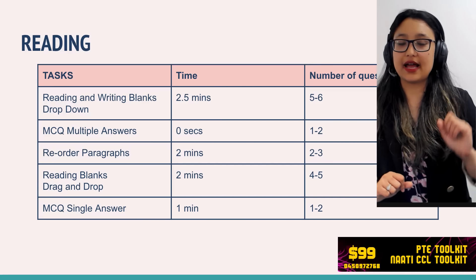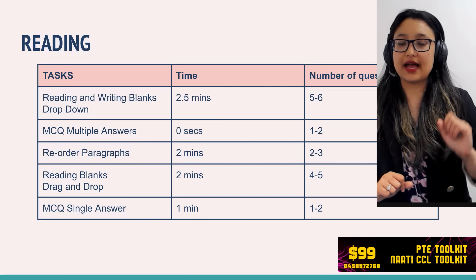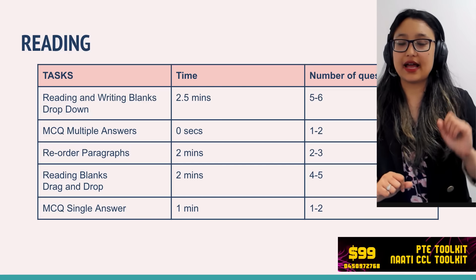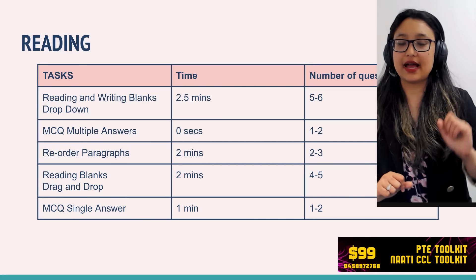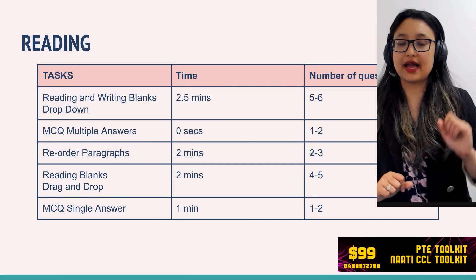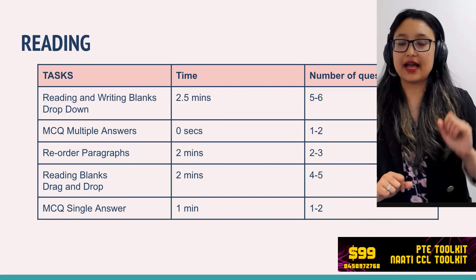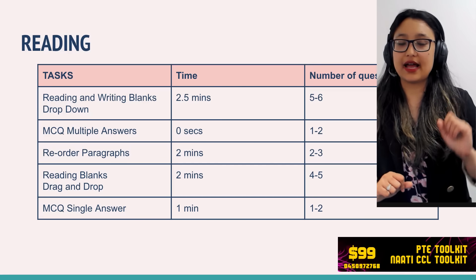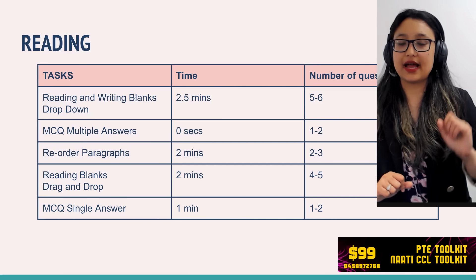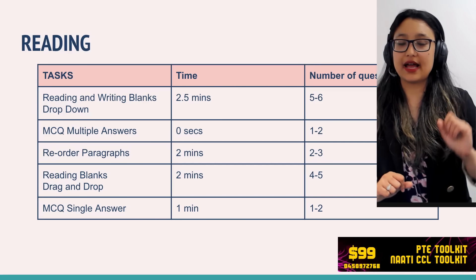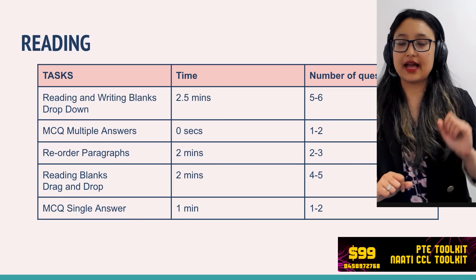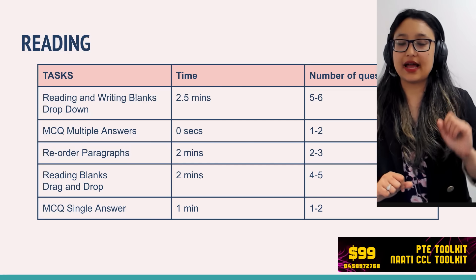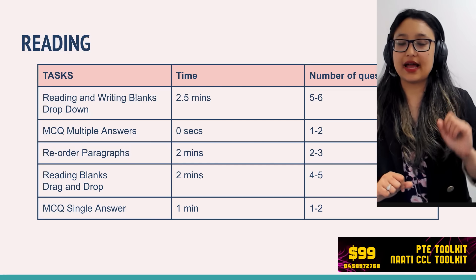The second question type is repeat sentence. You are given a sentence, you hear it, and repeat exactly what you've heard. However, the trick is you don't have to speak perfectly — you can still get full marks by speaking only about 50% of the content, as long as you maintain fluency and flow. Fluency is always the key in repeat sentence and all speaking modules. There are 10 to 12 questions and no preparation time.